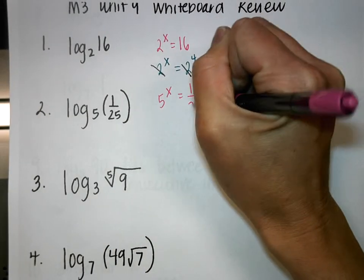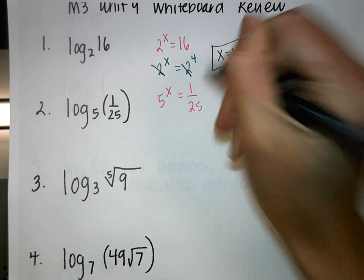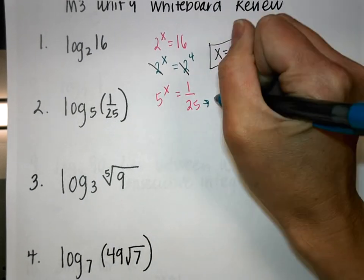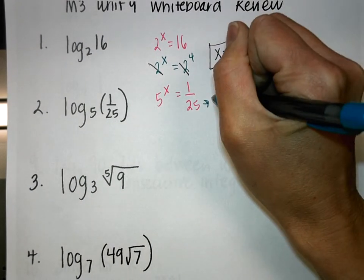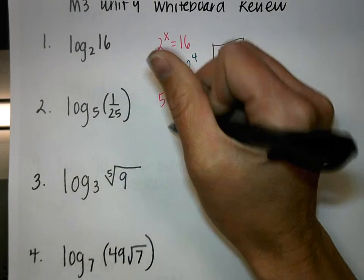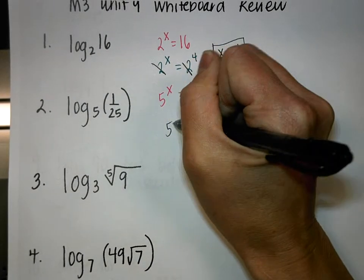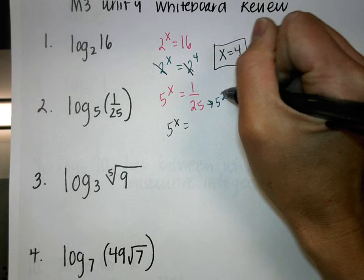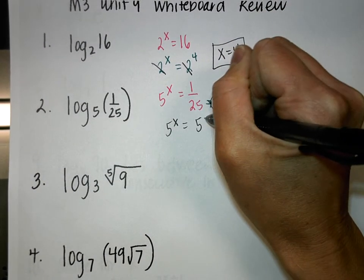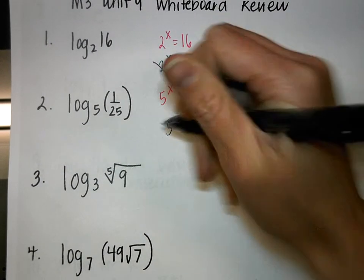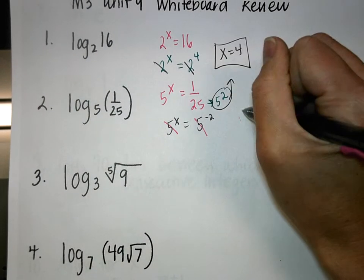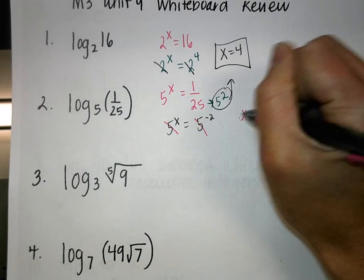You can then eliminate your bases and your answer is X equals 4. Next one: 5 to what power equals 1 over 25? 25 can be rewritten as 5 to the second power. To get them at the same level, you move it up and get a negative exponent, so the answer is X equals negative 2.